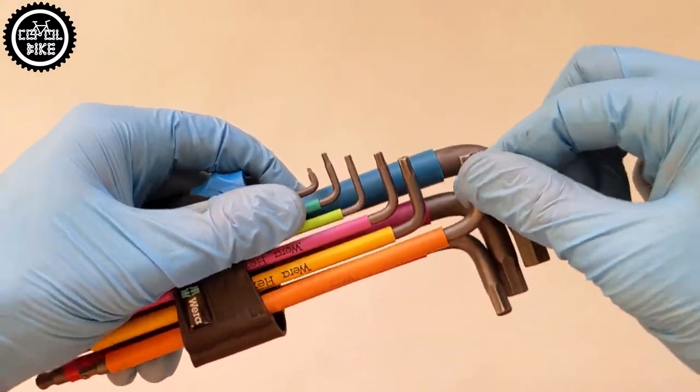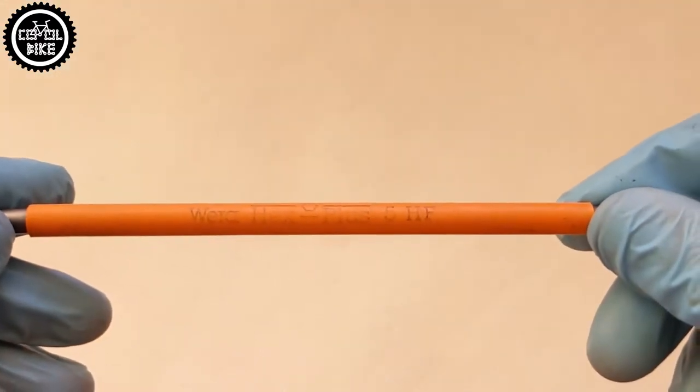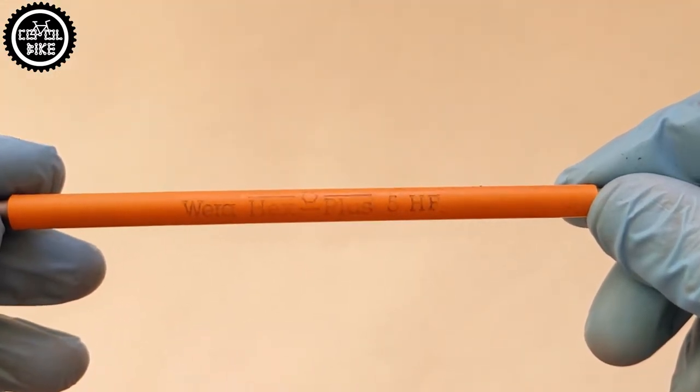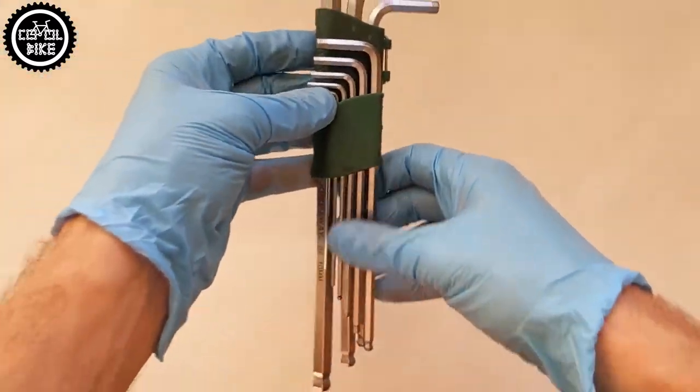This plastic cover is quite durable. Unfortunately, the inscriptions themselves came off quite quickly, despite the fact that my set does not work in difficult conditions, because for that I kept my Jonsway kit.